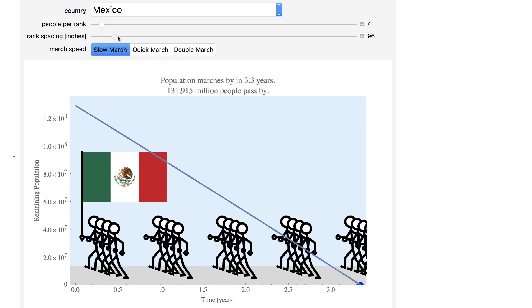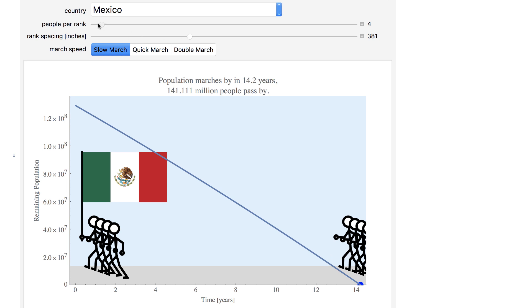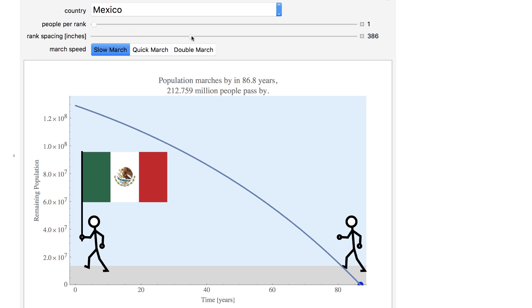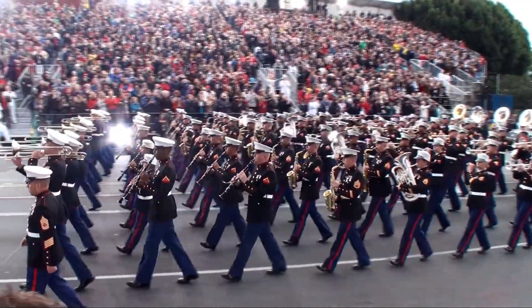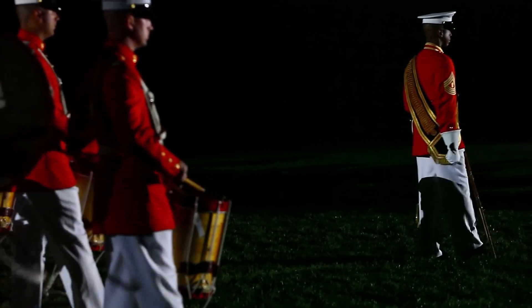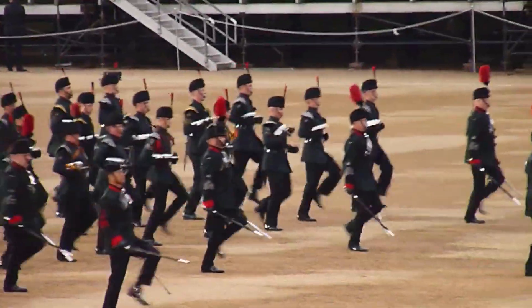The number of people passing per year is a function of the marching speed, the rank spacing, and the number of people per rank. For marching speed, a quick march is 120 steps per minute. A slow march is 60, and a double march is 180.